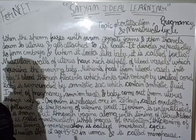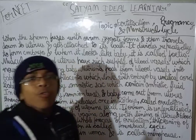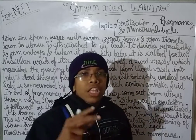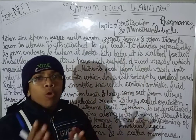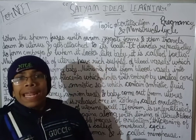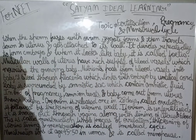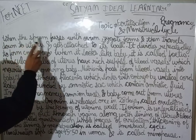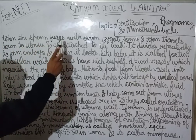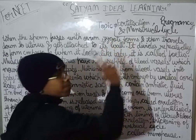In the fallopian tube, fertilization occurs. The fusion of the sperm and ovum happens in the fallopian tube, and then the zygote forms.